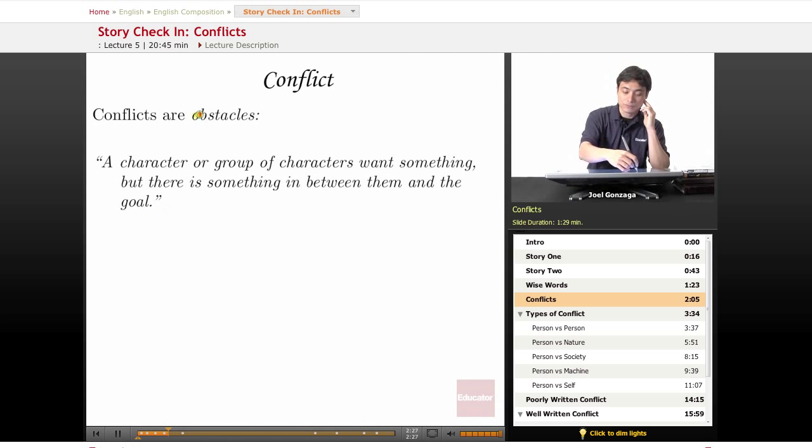First off, we have to understand conflicts as kind of obstacles. A character or a group wants something, but there's something in between them and the goal. Think about story two. Our man wants an omelet. Well, what's in his way? It's not just a street anymore. It's the zombie apocalypse is between him and his omelet. Maybe he's never going to get that omelet. But I bet you I could write an entire story about a man who just really wants an omelet and will do anything in the zombie apocalypse to get it.